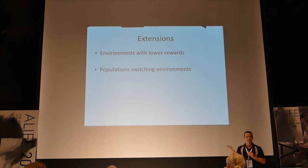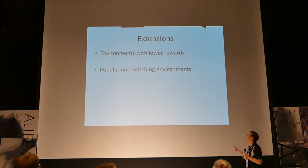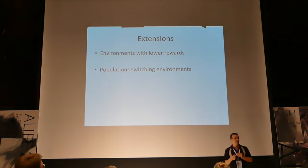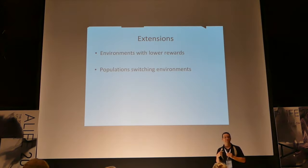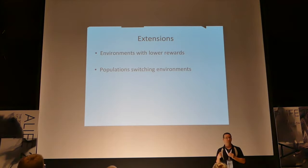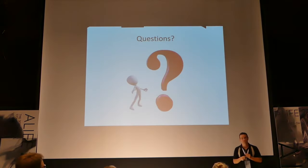Extensions we've either completed since submitting this work or are in the process of working on: we're looking at environments with lower rewards and at populations switching between environments. Populations that evolve in a more complex environment and then move to a radically simplified environment are more direct comparisons to what we've done in biological experiments in the past. We wanted to see if that's going to actually increase the degree of consistency of our results.